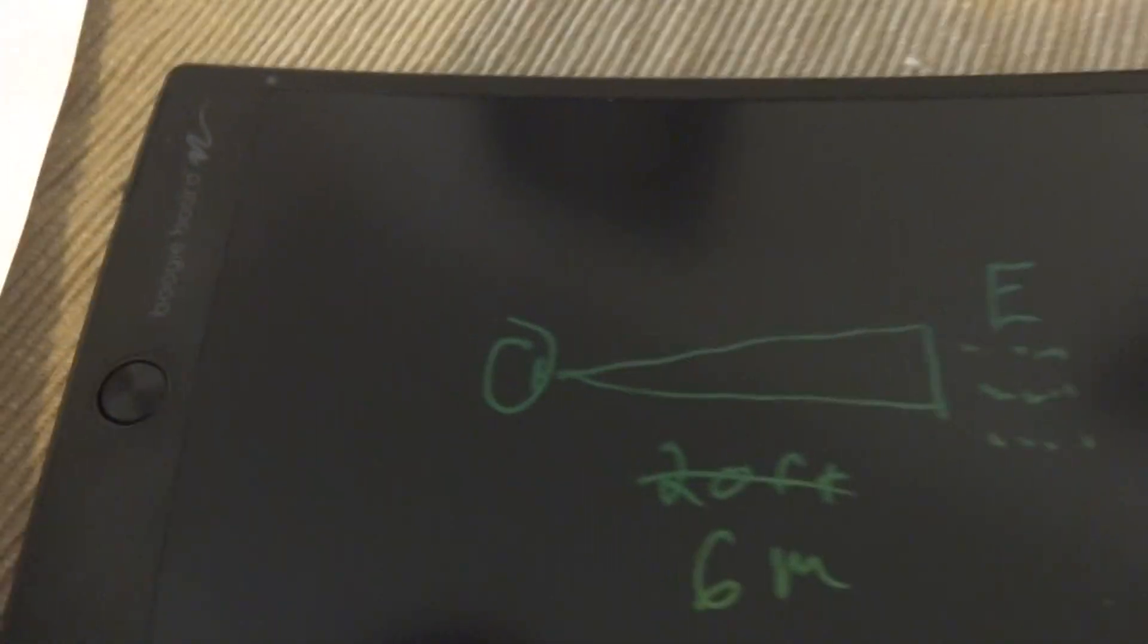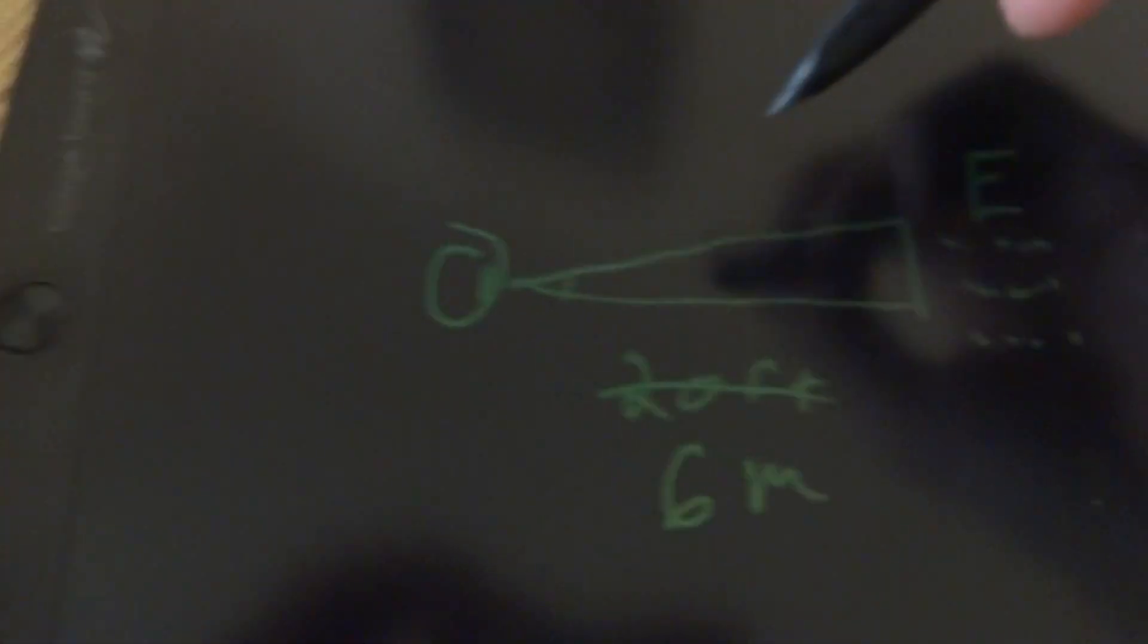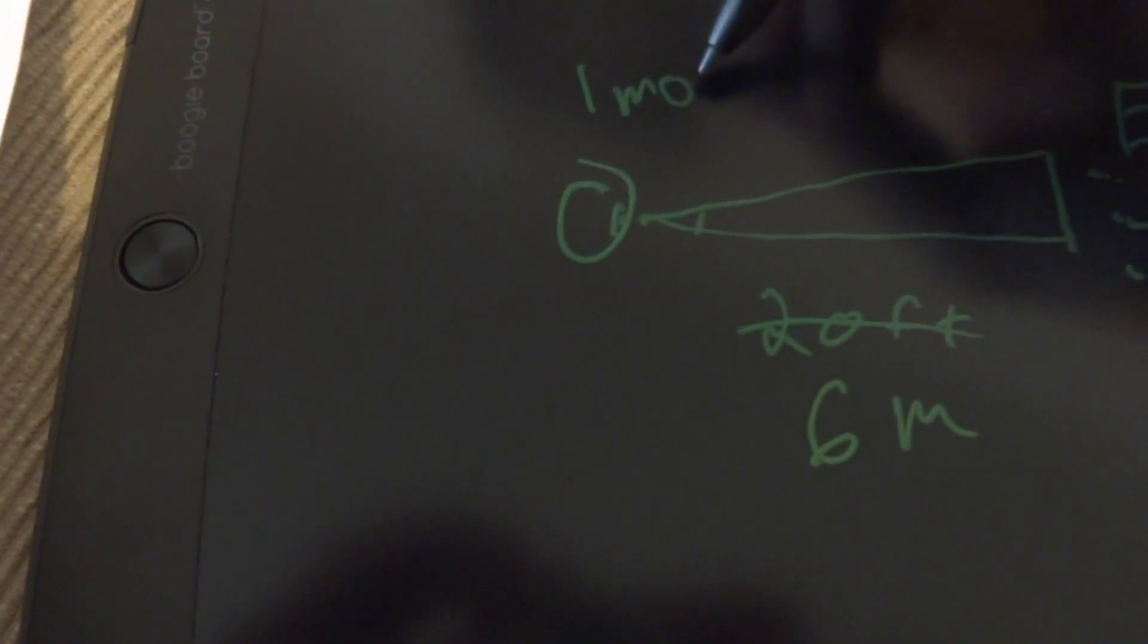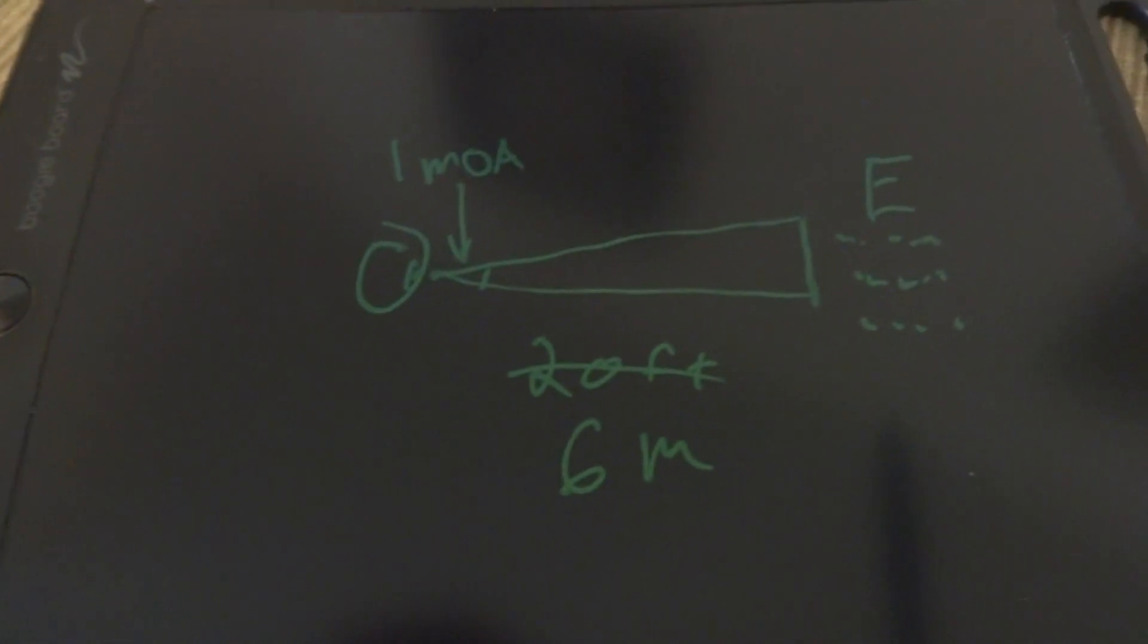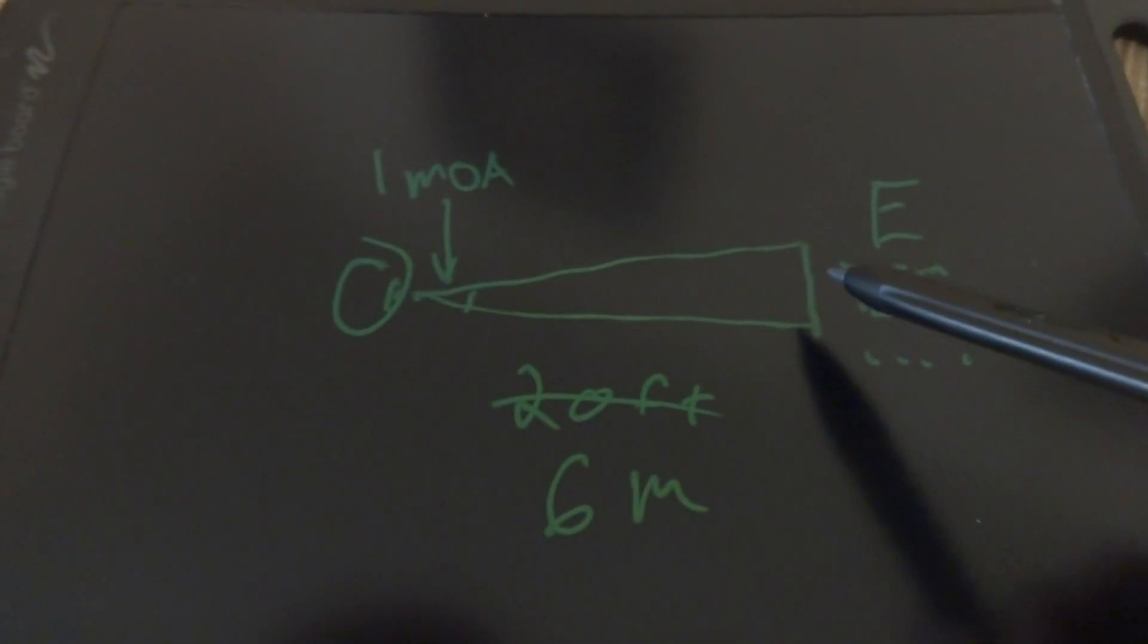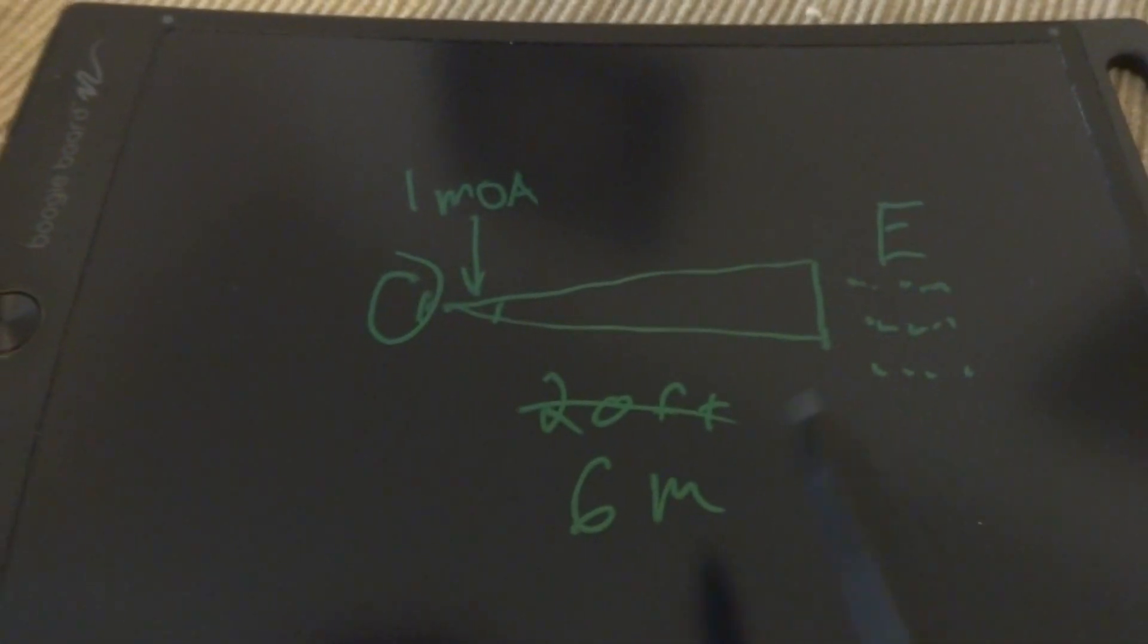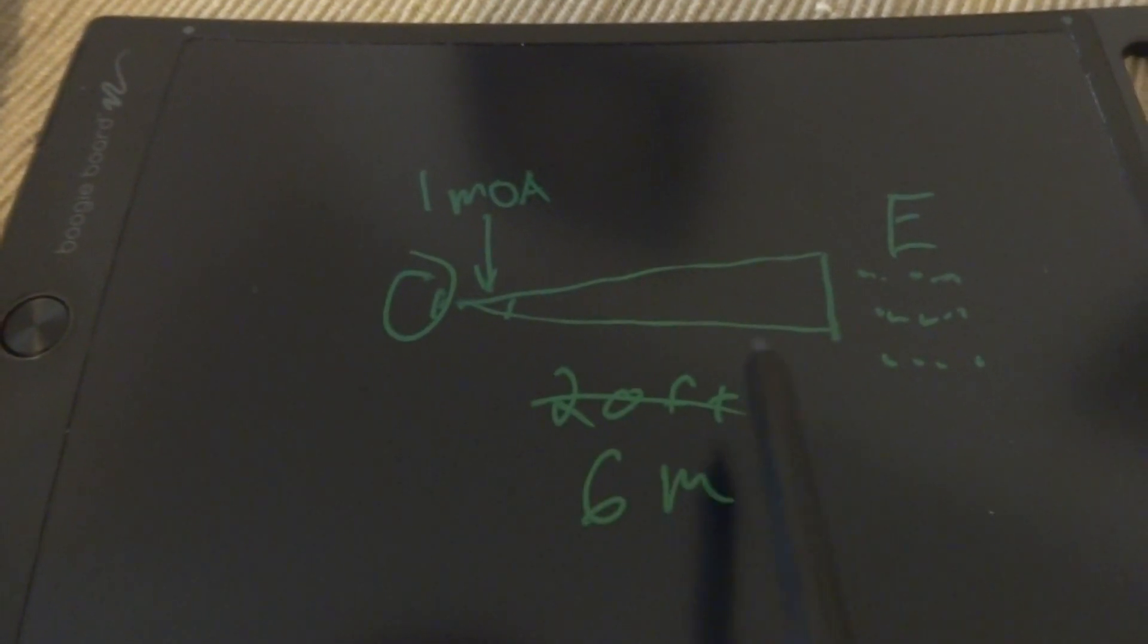So if we go back here to my crude drawing, we've got six meters on this side, and we know that this angle is one minute of angle. We don't really care about this, this is the hypotenuse of a right triangle. So what we need is we're trying to figure out how big this is right here - this is the critical detail of a letter, that's the size. So we know the angle and we know the adjacent side of the triangle, right? So what we're looking for is the opposite.